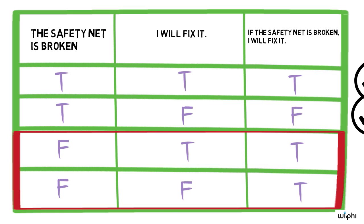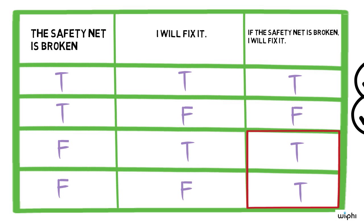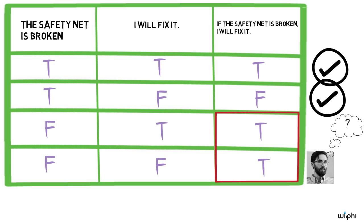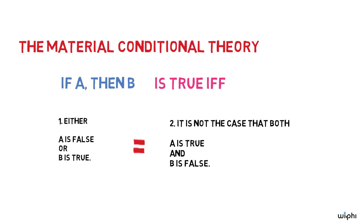Let's turn now to the third and fourth lines of the truth table. Together they represent the condition that the safety net doesn't need repair. The table says that the conditional is true in that case no matter what else happens. Does this seem right? Is what Romney says true if the safety net doesn't need repair regardless of what else happens? If you're like me you may be unsure what to think. That's okay.